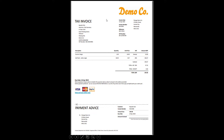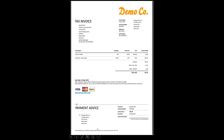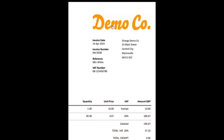Here we have an example of a tax invoice. You can see the layout, the name of the company, the description, and payment methods. This invoice is going to Bayside Club — you can see the details and where it's located. We can also see the company name (Demo Company), the invoice date, invoice number, reference number, and the VAT number.